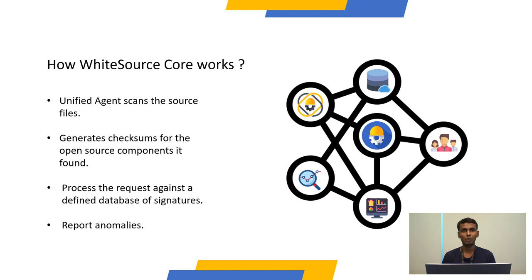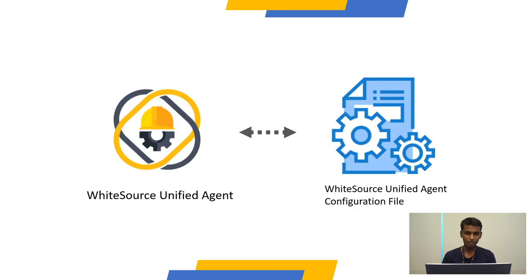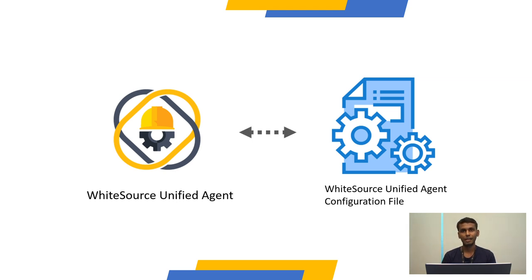There are two components you need to get comfortable with. There's the unified agent, as I talked about earlier, and there's the unified agent configuration file. Those things are integrated with each other. The unified agent configuration file has many properties defined, like the API key, include file types, excludes, product name, project name, and the server URL. It's really handy to maintain a repository using that particular configuration file, but there are some constraints as well, which I'll talk about in the best practices section.